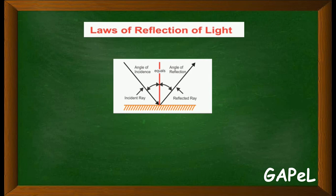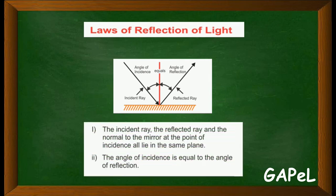And the second law is: the angle of incidence is equal to the angle of reflection. The angle between the normal and the incident ray is equal to the angle of reflection.